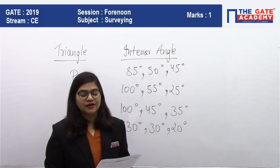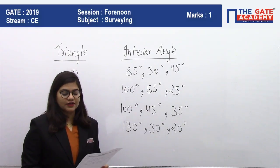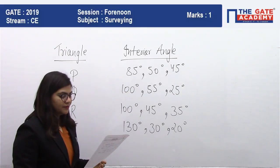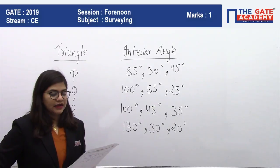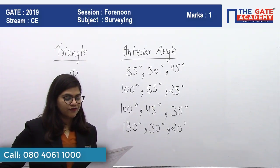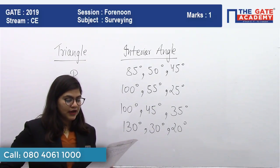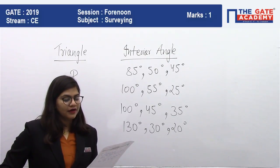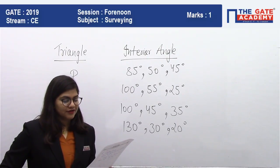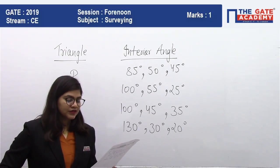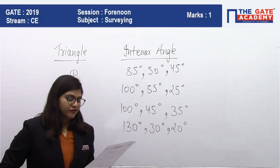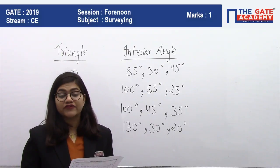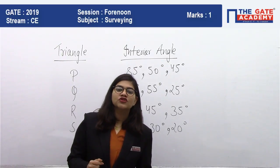The question gives interior angles of four triangles. Triangle P has angles 85°, 50°, and 45°. Triangle Q has angles 100°, 55°, and 25°. Triangle R has angles 100°, 45°, and 35°. Triangle S has angles 130°, 30°, and 20°. Which triangles are ill-conditioned and should be avoided in triangulation survey?